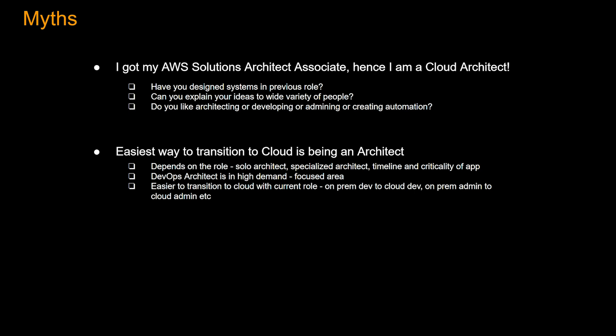For some projects, they need help on specialized areas like security, and if you already know a lot about security, that would be a little easier. It always depends on the timeline of migration and criticality of the app. One tip: if you know about automation, DevOps architect is in high demand currently, and that might be a smoother entry point. It is easier to transition to cloud with your current role — if you are an on-prem Java developer, you can become a cloud Java developer easily, because Java is Java at the end of the day.